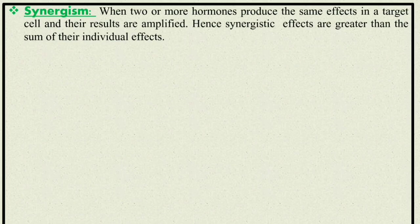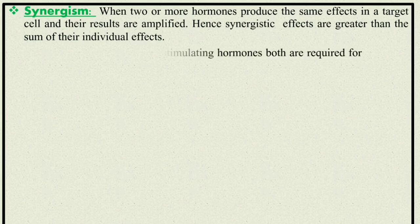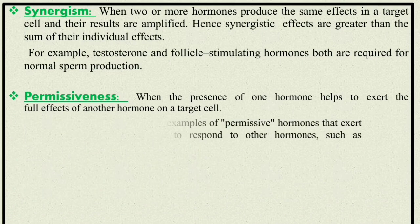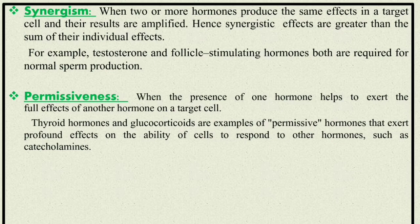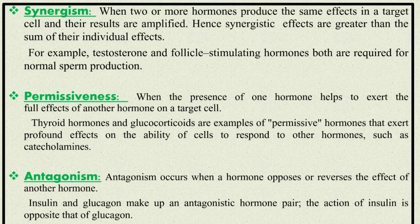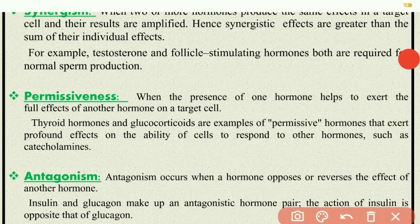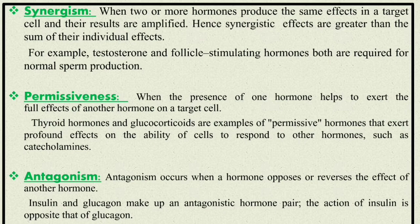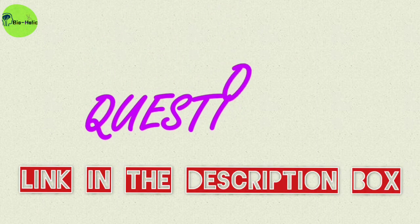Three other important terms relate to the mechanism of action of hormones. First, synergistic action: when two or more hormones produce the same effects on a target cell, results get amplified — for example, testosterone and FSH are both required for normal sperm production. Second, permissiveness: when the presence of one hormone helps exert the full effects of another hormone on a target cell — for example, thyroid hormones and glucocorticoids exert profound effects on the ability of cells to respond to catecholamines. Third, antagonism: when a hormone opposes or reverses the effect of another hormone — for example, insulin and glucagon are an antagonistic hormone pair.